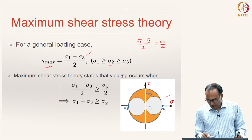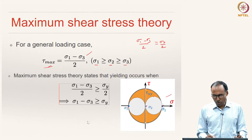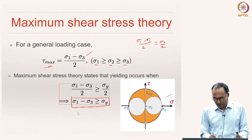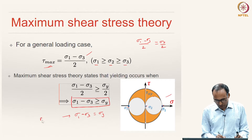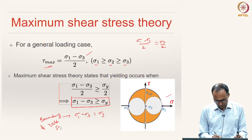Maximum shear stress theory states that yielding occurs when sigma 1 minus sigma 3 divided by 2 is greater than or equal to sigma_y divided by 2, or in other words sigma 1 minus sigma 3 is greater than or equal to sigma_y. The boundary of the failure surface is given by sigma 1 minus sigma 3 equal to sigma_y, which represents the yield surface in maximum shear stress theory.